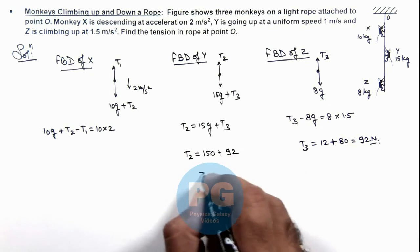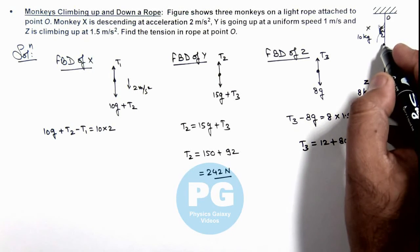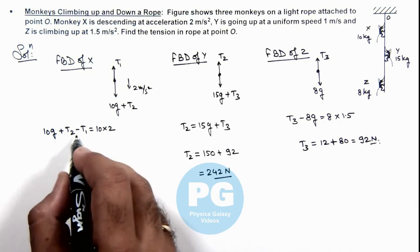So the value we are getting is 242 Newtons. This is the tension in this part of the string. If we substitute the value of T2 over here,